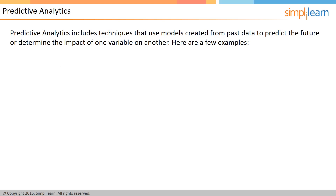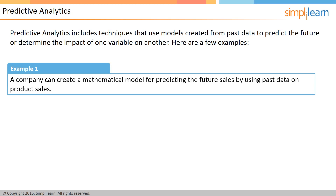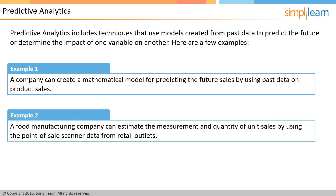Predictive analytics converts data into actionable and usable information, determining possible future outcomes or the likelihood of a situation. It includes statistical techniques from machine learning, data mining, modeling, and game theory, using models created from past data to predict the future or determine the impact of one variable on another. Businesses use patterns in transactional and historical data for identifying opportunities and risks. Its three basic cornerstones are predictive modeling, decision analysis and optimization, and transaction profiling. Examples include optimizing CRM systems, creating mathematical models for predicting future sales, and estimating unit sales quality using point-of-sale scanner data.